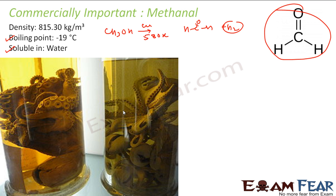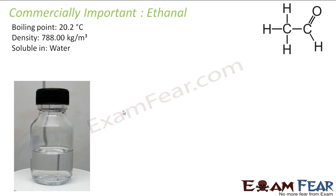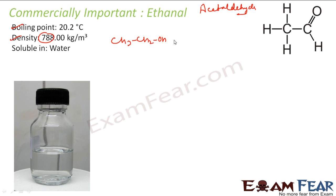The next one is ethanal (acetaldehyde). It is a pretty transparent liquid with the formula CH3CHO. Its boiling point is 20 degrees Celsius and density is 788 kg per meter cube. It is soluble in water. To prepare it, one option is to take ethyl alcohol and use copper or silver catalyst at around 525 Kelvin, which gives you CH3CHO.